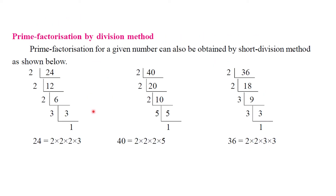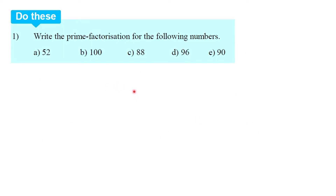So first, we call it prime factorization. We find the prime factorization for the following numbers. First: 52. So 2 table is applied — we use divisibility rules.